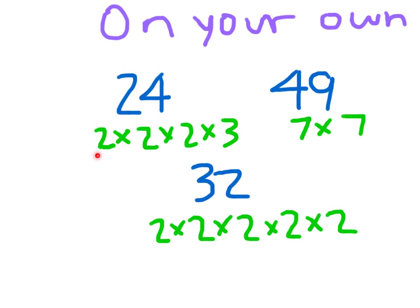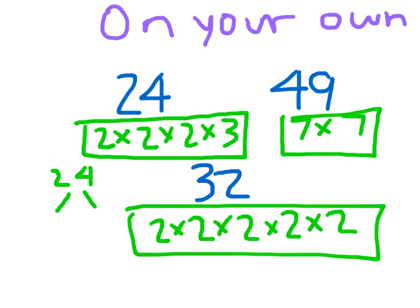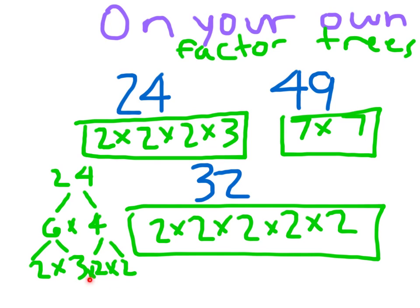For 24, what you should have come up with is 2 times 2 times 2 times 3 for the prime factorization of 24. I'm sure your factor tree ended up looking similar — that's the lowest level of the factor tree, and we put those back in order for the prime factorization. Your answer could vary depending on what you chose to start with, but if you put those back in order and remembered what a prime number is, you would have come up with exactly that same thing. Thanks for joining us today.